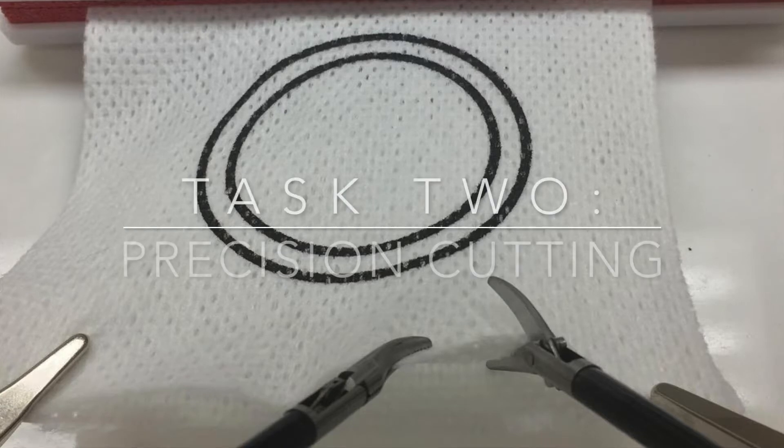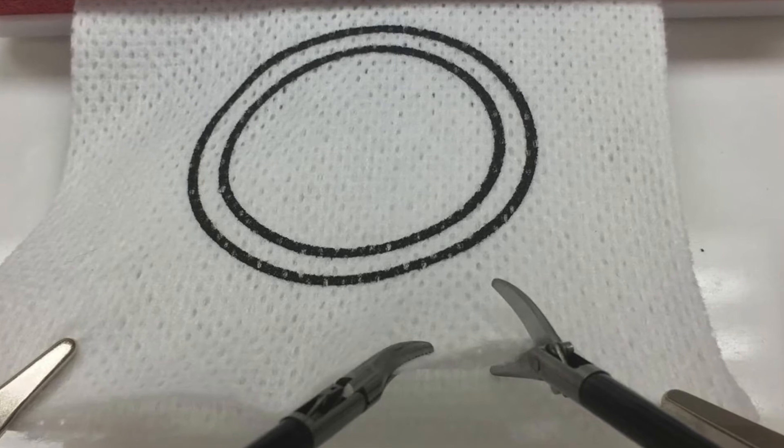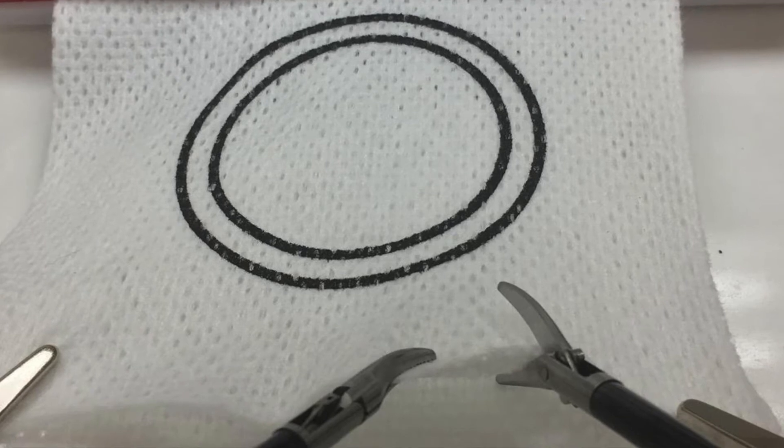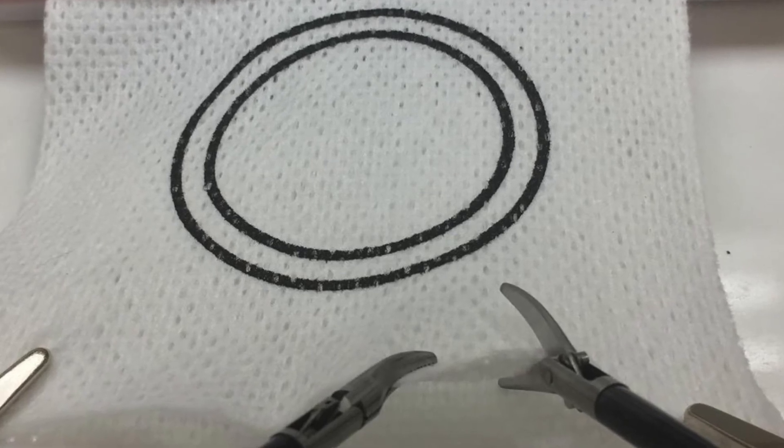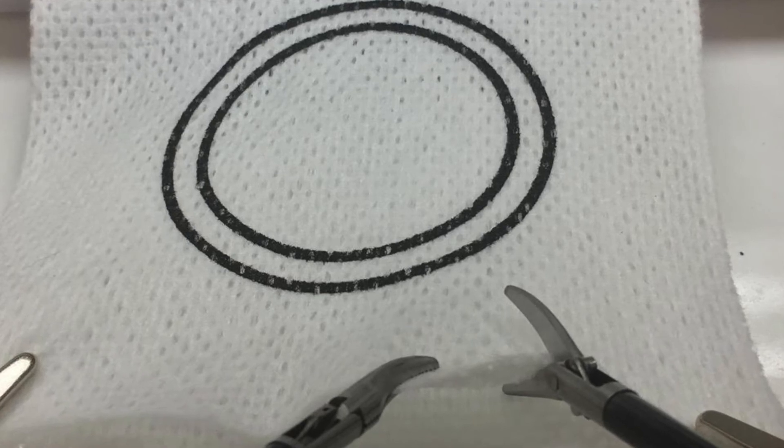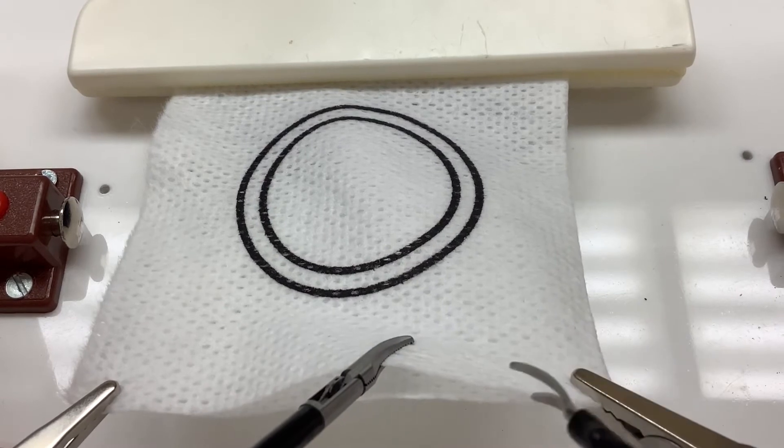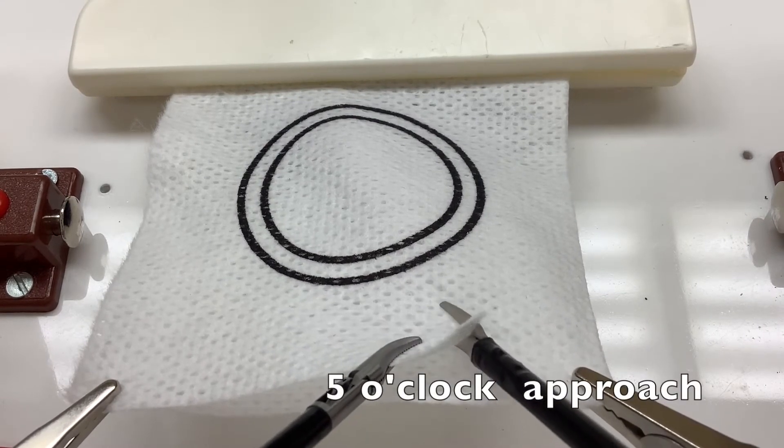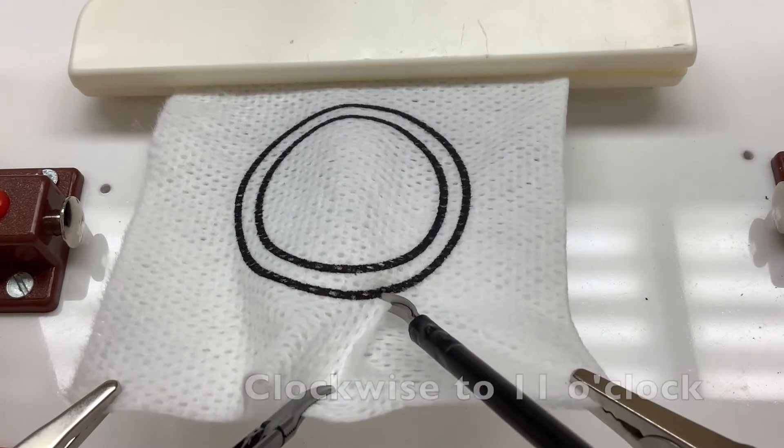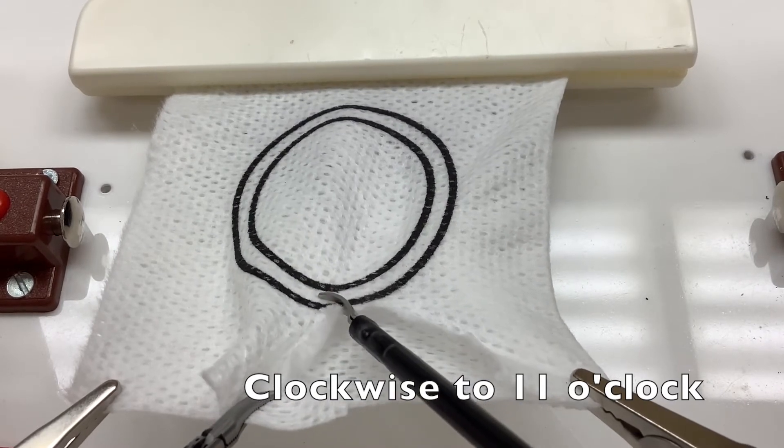Task 2, Precision Cutting. The actual exam utilizes only one circle. We recommend directly cutting on the black lines when using the practice gauze to simulate real testing conditions. We recommend approaching the circle from a 5 o'clock position. In order to cut a continuous edge, partially close the blades of the scissors and maintain both blades along the incision.